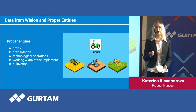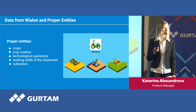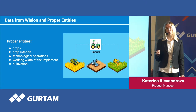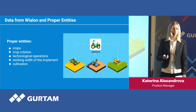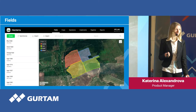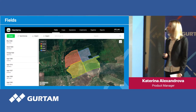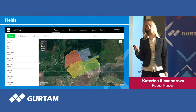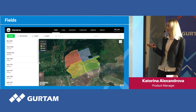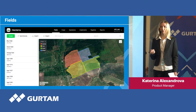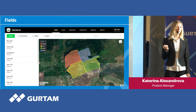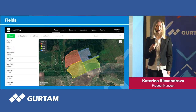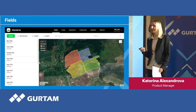Many of you may have already seen Hectera during the beta testing period or after the official release. I will make a brief overview of the interface and show the most significant points. First of all, fields. Fields can appear in Hectera by synchronization with geofences from your Wialon resource, or they can be imported from KML or shapefiles, or drawn directly in Hectera. What is special about fields in Hectera, compared with Wialon geofences, is that they can have holes — places of unused or uncultivated area, such as a pond, a building, or a group of trees.